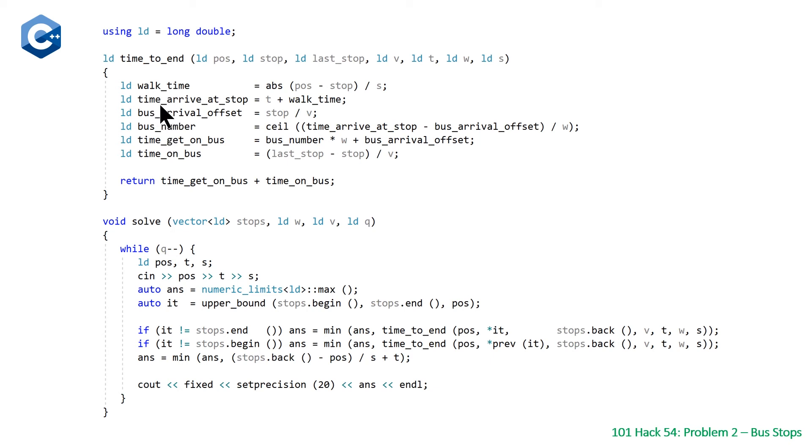So this temporary variable is the time at which we arrive at the bus stop. Then we calculate the bus arrival offset, so the stop number divided by the speed—that is how long it takes the bus to get to the stop that we're currently looking at.